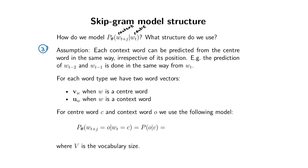Basically, if we have the word 'loves' and the word 'son,' we're going to treat the probability of 'son' the same irrespective of whether it's two words before the center word or one word after the center word. That probability will be the same.